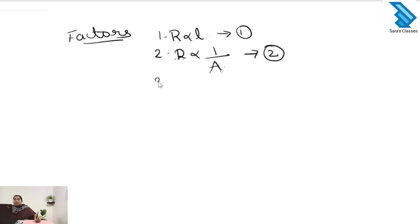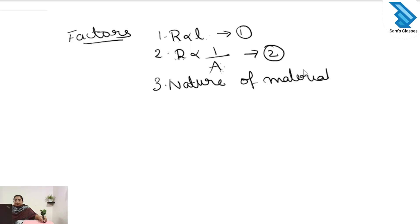The third factor is the nature of the material. So these are the three factors which affect the resistance of the conductor: the resistance depends on the length, area of cross section, and nature of the material.